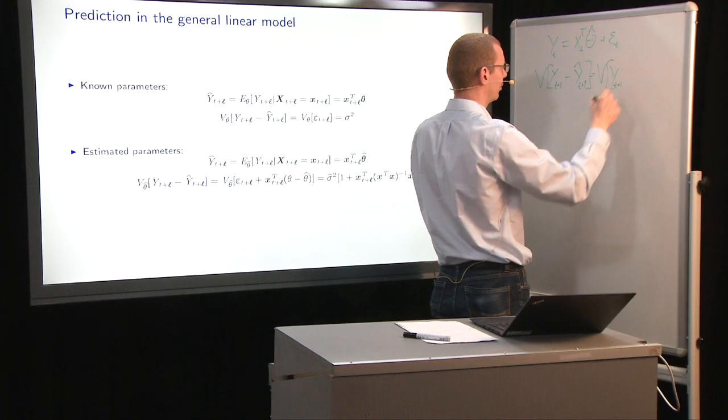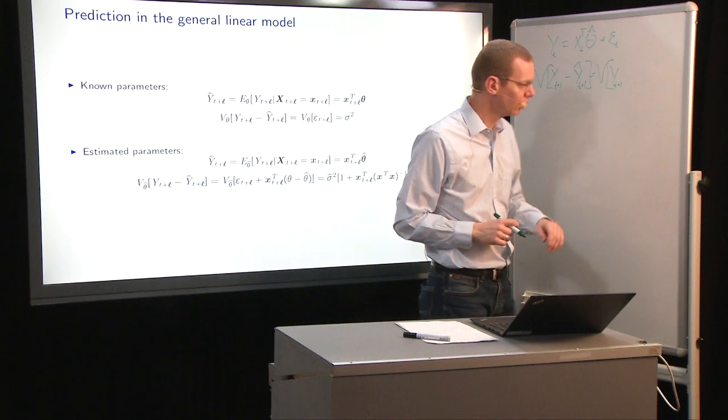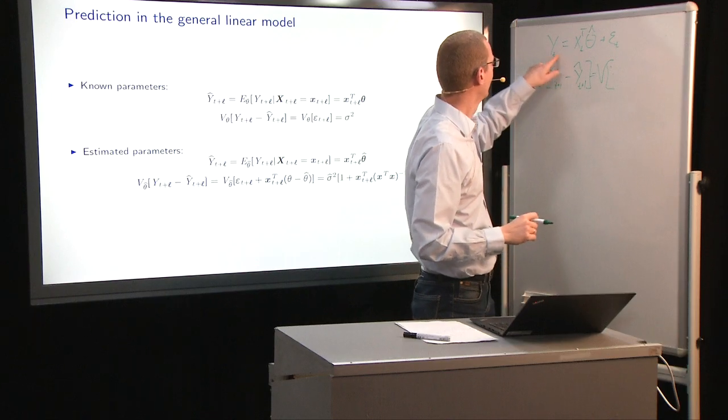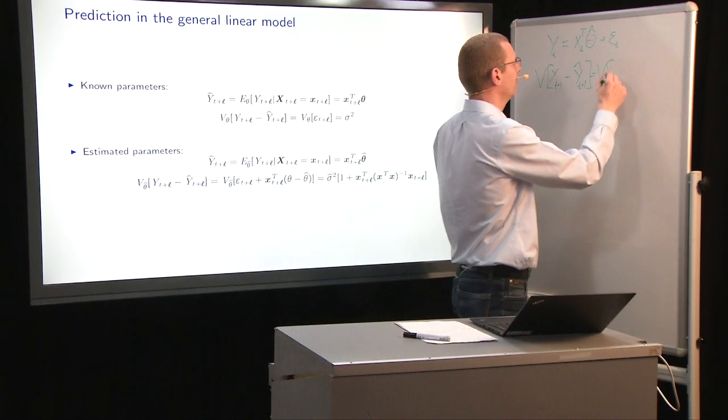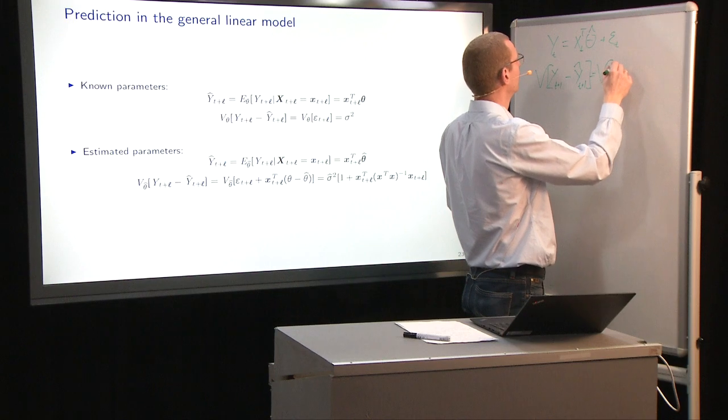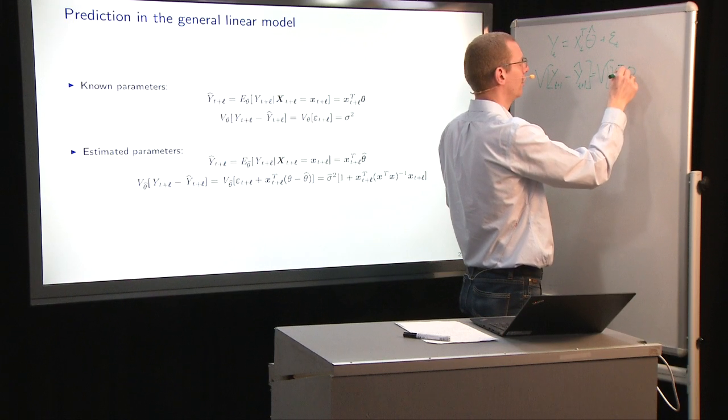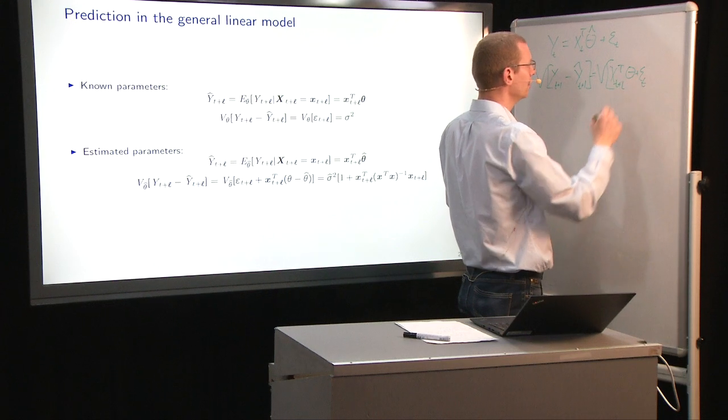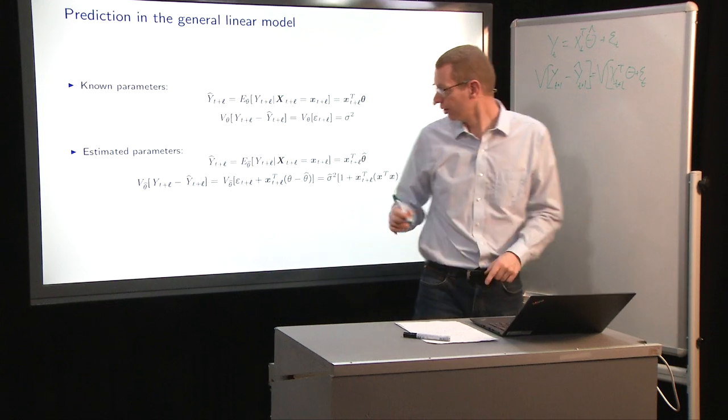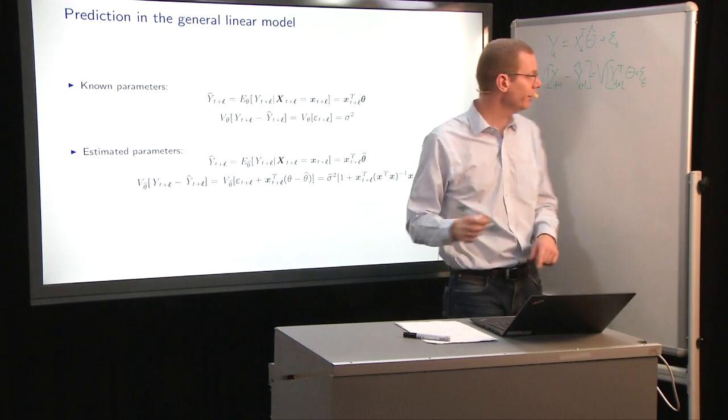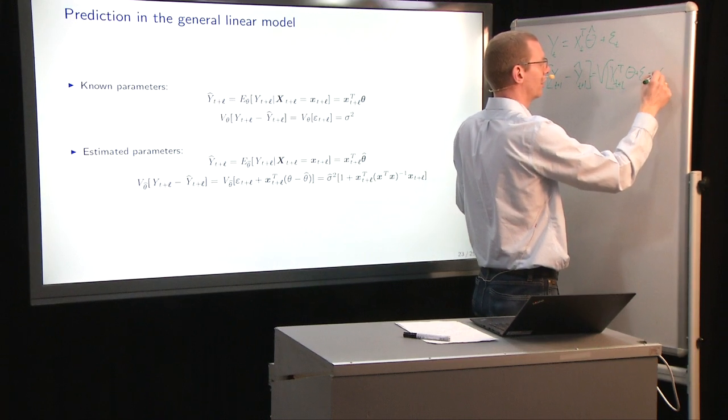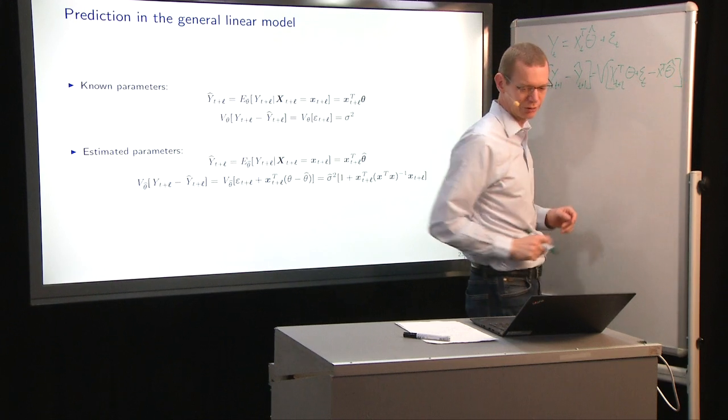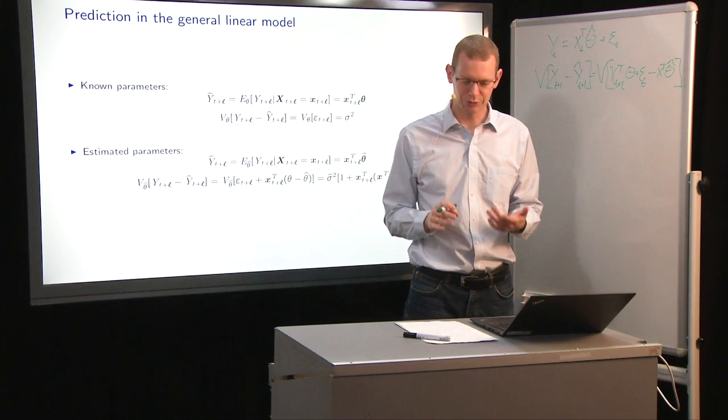let me just... So the true observation is X t plus L transpose on theta, the true value of theta, plus epsilon t, minus our predicted value that we have right there. So that's minus X transpose theta hat. So that's the variance that we want to look at.